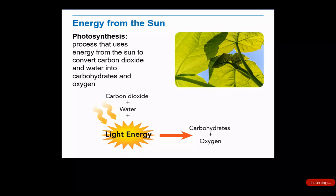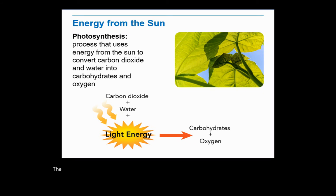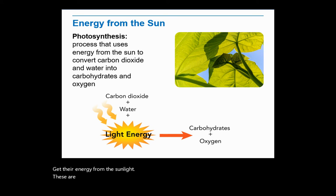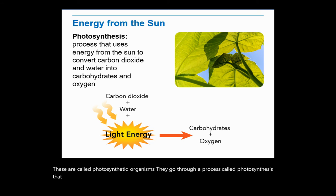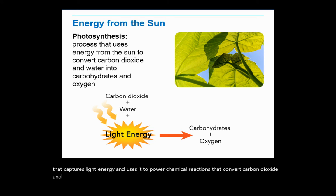The primary producers that we are most familiar with get their energy from the sunlight. These are called photosynthetic organisms. They go through a process called photosynthesis that captures light energy and uses it to power chemical reactions that convert carbon dioxide and water into oxygen and carbohydrates.